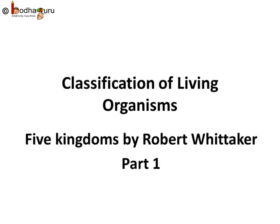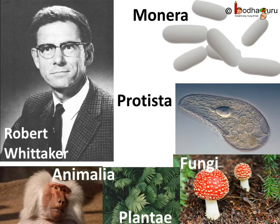Good morning everyone. In the last class, we understood why the classification of living organisms was done and why it was important. So let us see the classification of all living organisms done by Robert Whittaker into five broad categories called kingdoms. The five kingdoms he proposed were Monera, Protista, Fungi, Plantae, and Animalia.